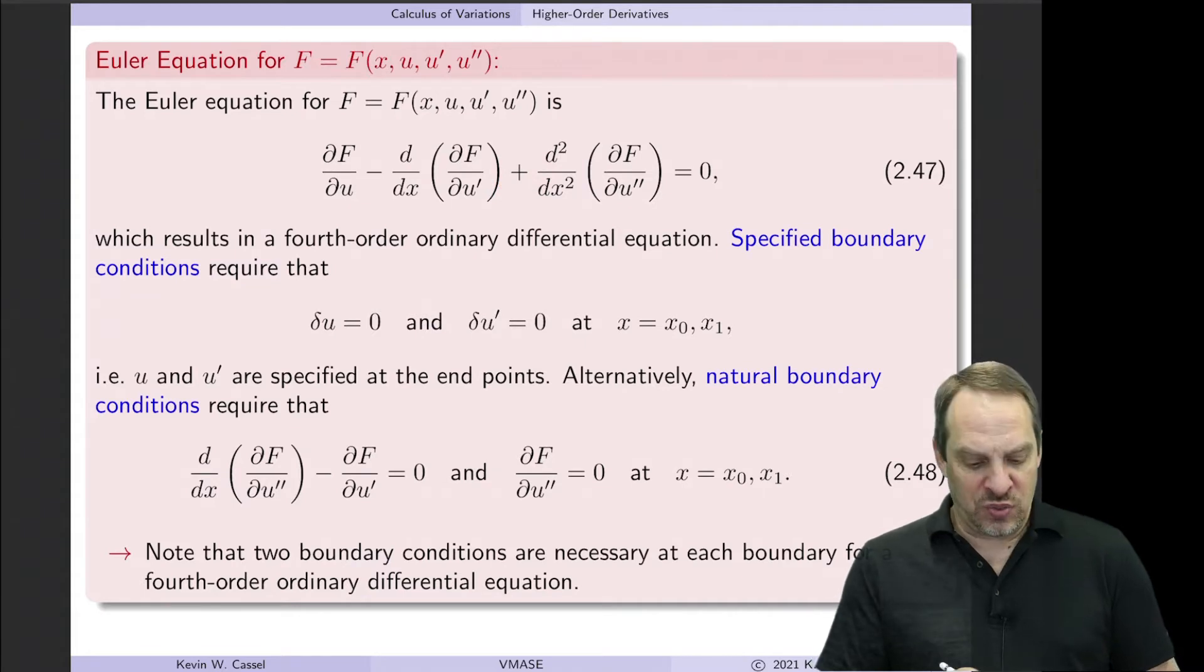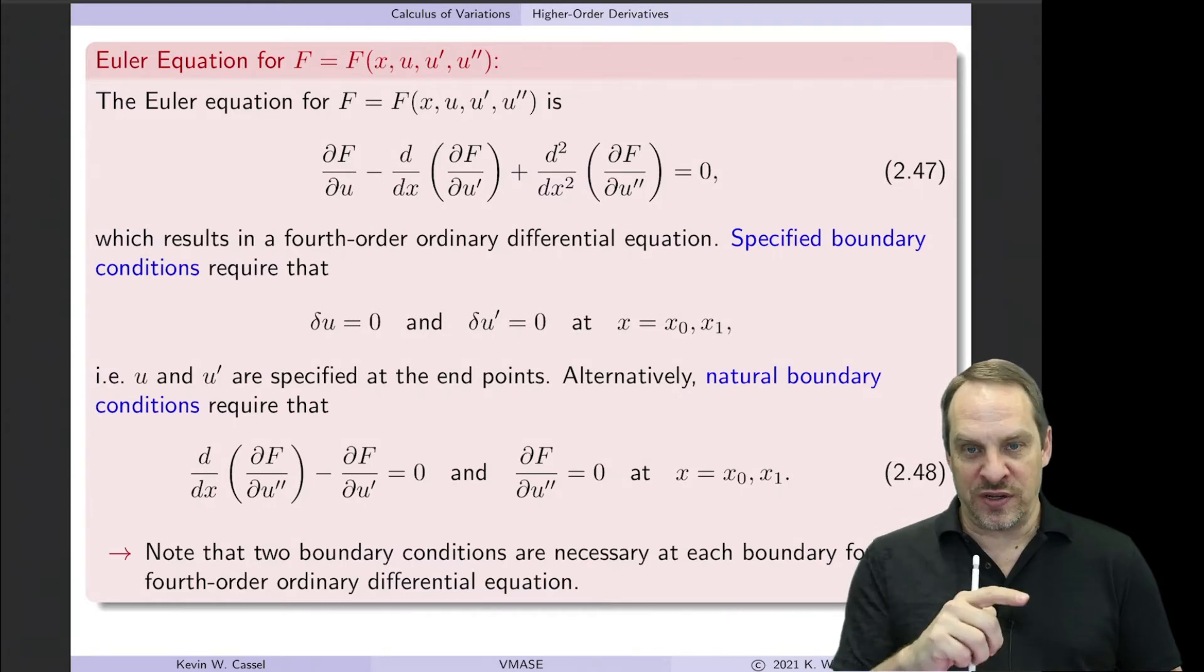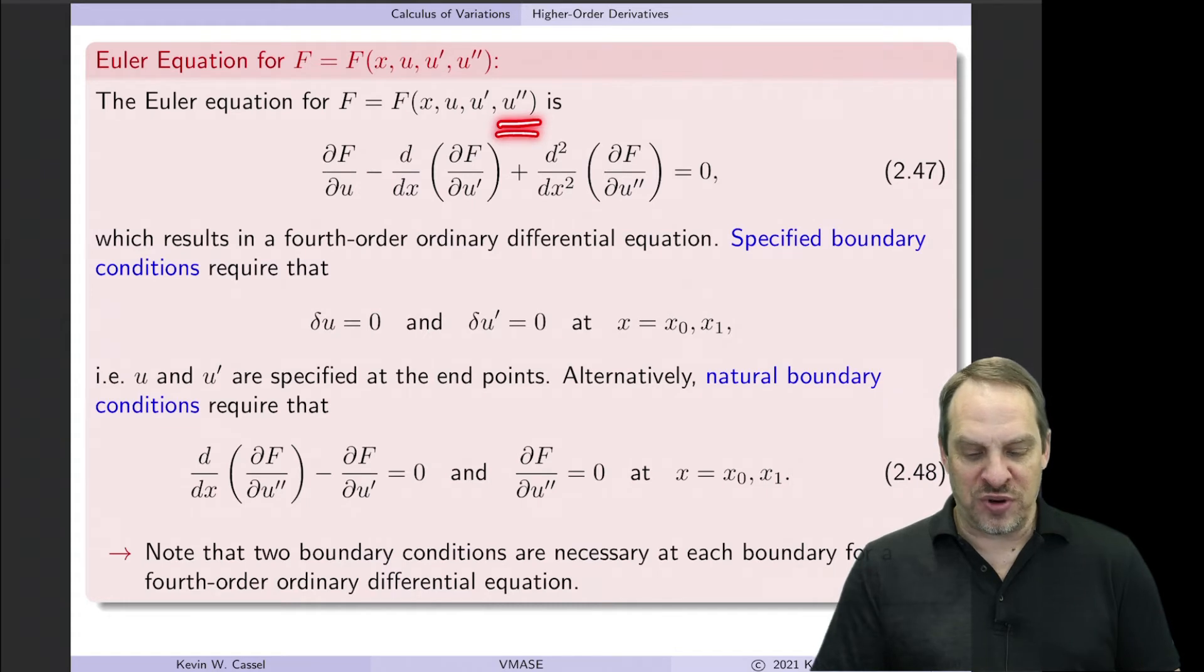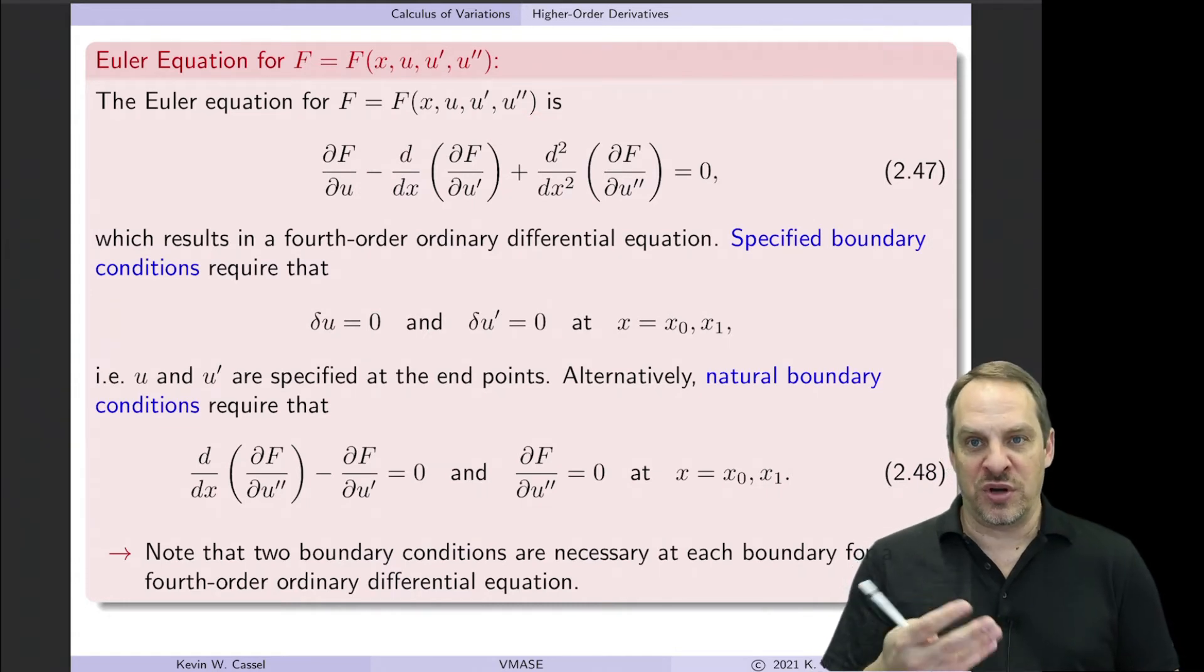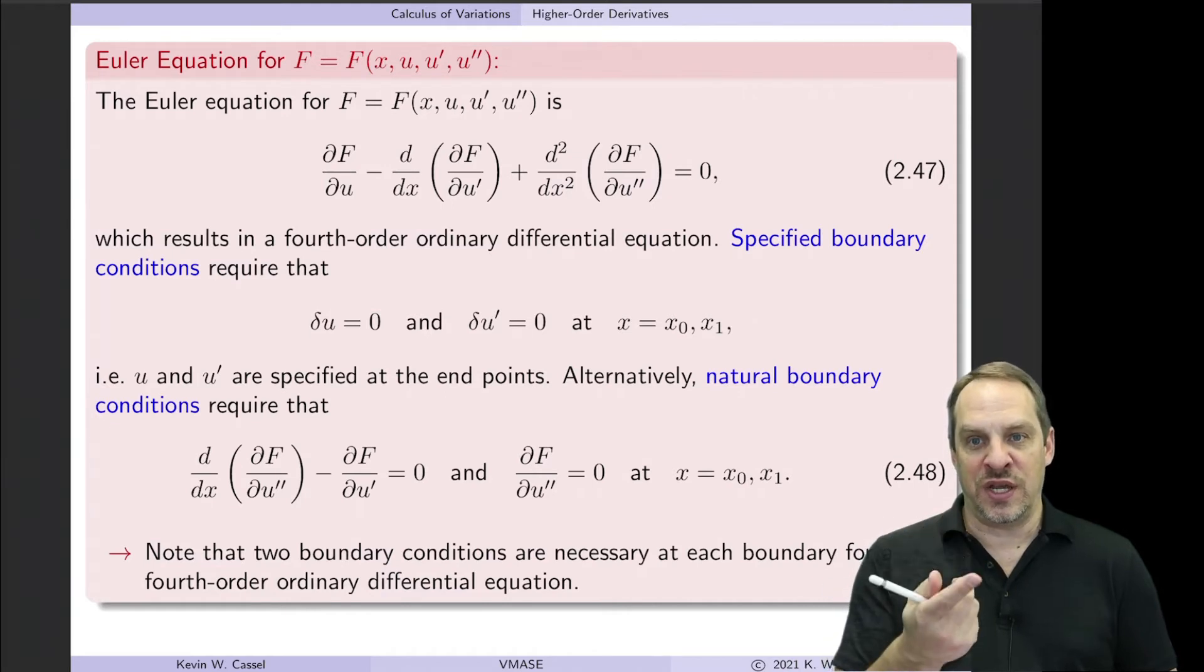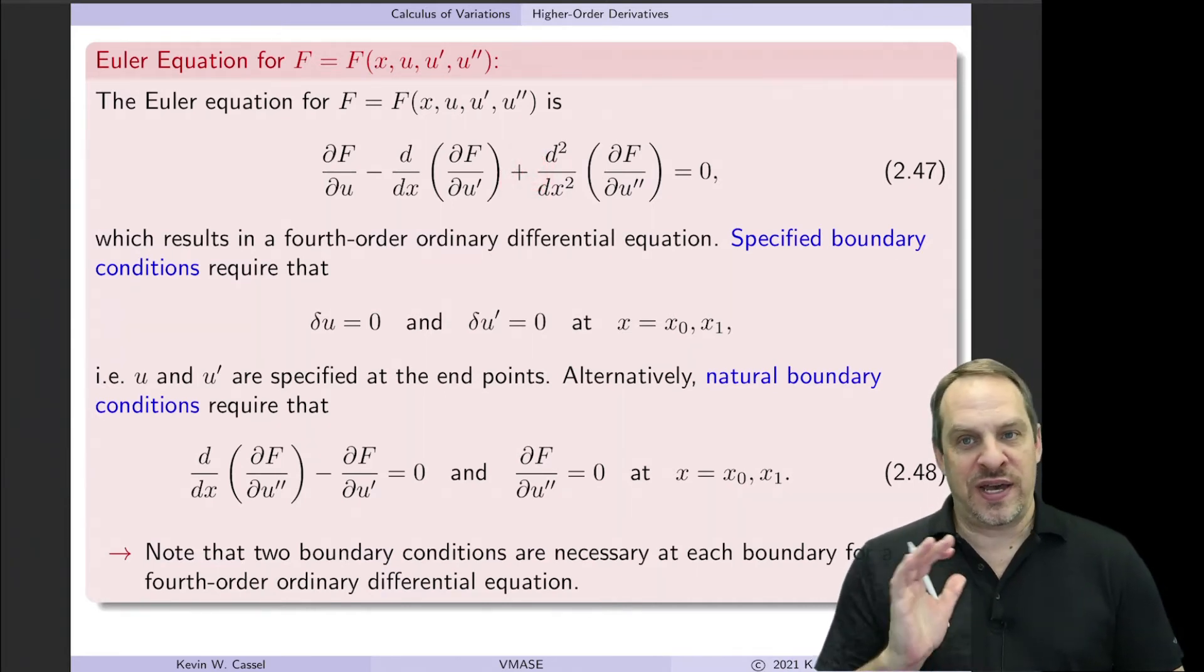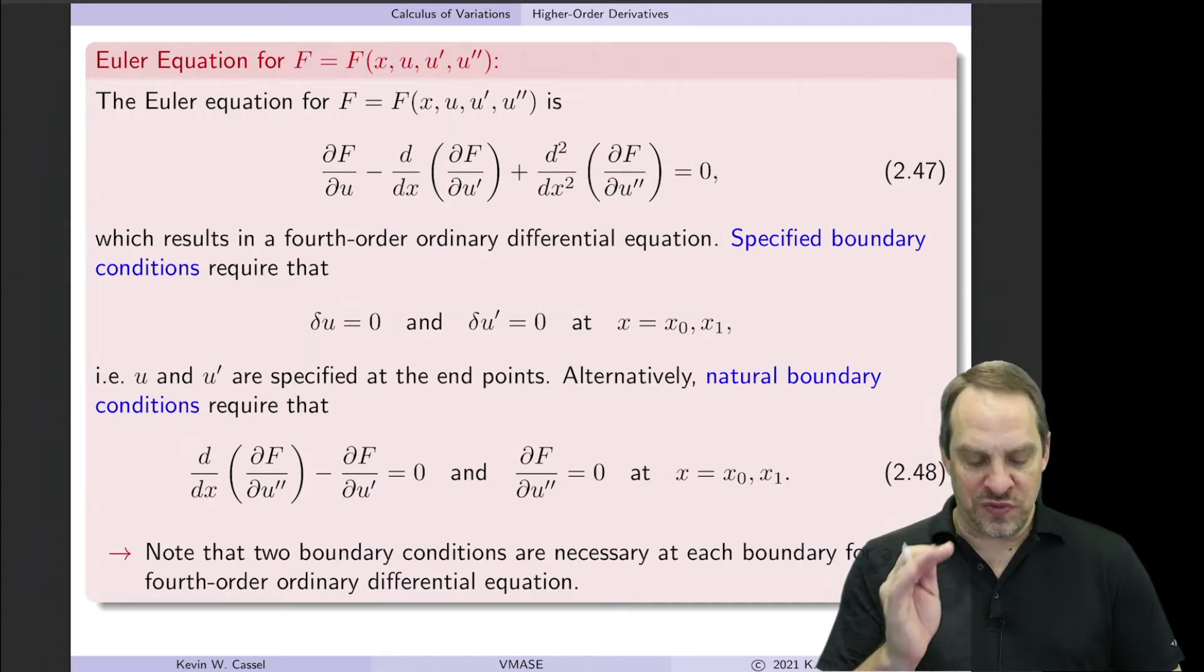And you'll notice it's a plus sign here. Why would that be a plus sign? Well, to get this term, I did one integration by parts, which changes the sign of the integral. So that's why we get the negative sign. If I have u double prime, so two derivatives, I have to do integration by parts twice. And so that changes the sign from positive to negative and negative back to positive. So it's exactly what you'd expect. It's very intuitive and very straightforward.